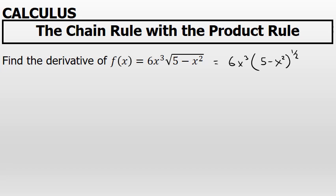At its core, this derivative will require the product rule. There are two factors: 6x to the third, and 5 minus x squared to the one-half power. In the second factor, 5 minus x squared to the one-half power, the derivative will require the chain rule.